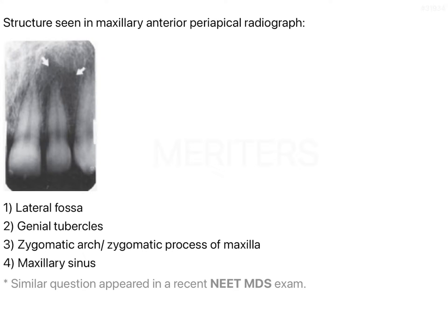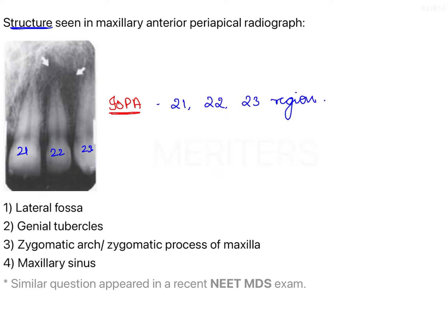We have an image-based question in which a radiograph is given. This radiograph is an intraoral periapical radiograph covering central incisor, lateral incisor, and a portion of canine — that is the 2-1, 2-2, and 2-3 region. The question is to identify the structure seen in the maxillary anterior periapical radiograph.